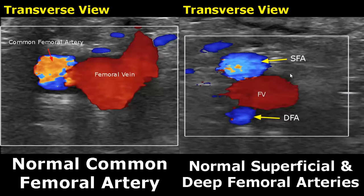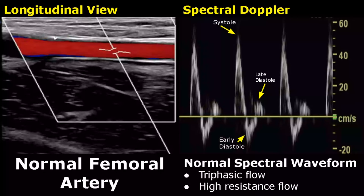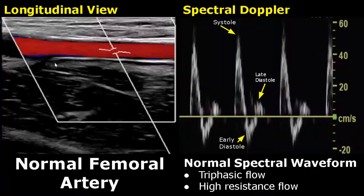Color Doppler is applied and the arteries will be seen pulsating. Here is a longitudinal view showing normal femoral artery with no obstruction. This is the normal spectral waveform of the femoral artery — a triphasic high-resistance flow. We see a sharp systolic peak with some flow reversal in early diastole and forward flow in late diastole. The peak systolic velocity can be around 60 centimeters per second.